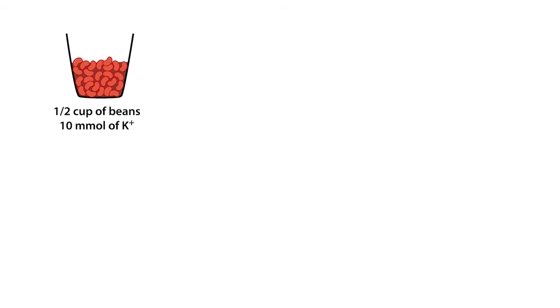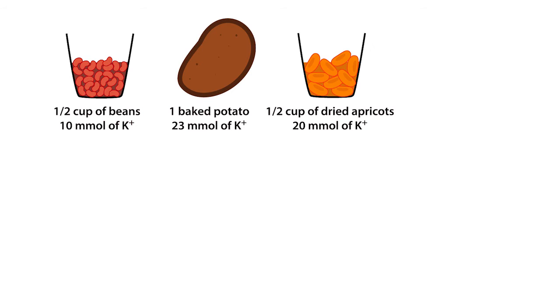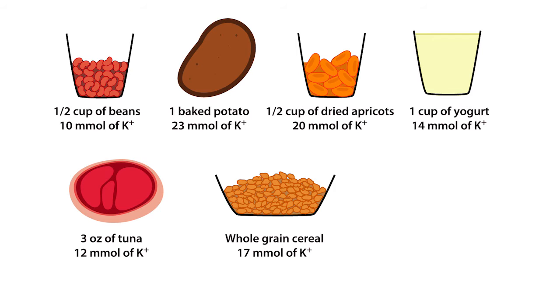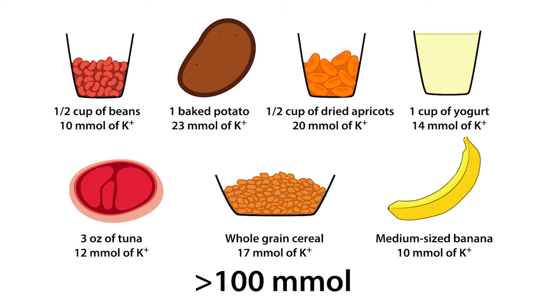If you ate ½ cup of baked beets, 1 potato, ½ cup of dried apricots, 1 cup of yogurt, 3 ounces of tuna, 1 cup of whole-grain cereal, and a medium-sized banana, you would reach at least 100 millimoles of potassium intake.